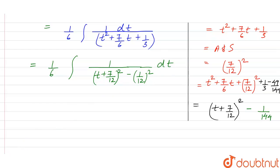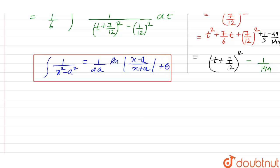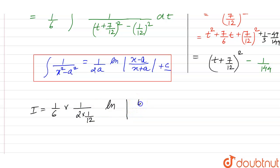We apply the property that the integral of 1 upon x squared minus a squared equals 1 by 2a times ln modulus of x minus a upon x plus a, plus C. So I equals 1 by 6 times 1 upon 2 times 1 by 12, times ln modulus of t plus 7 by 12 minus 1 by 12, over t plus 7 by 12 plus 1 by 12.